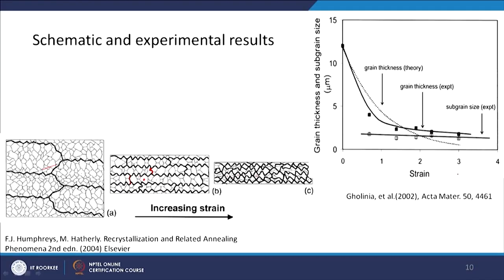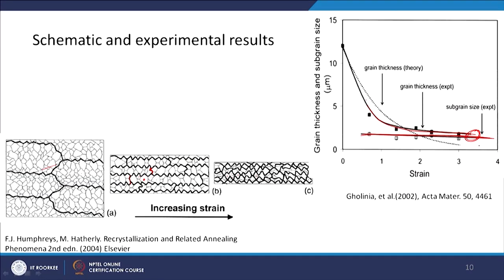On the curve showing grain thickness and sub-grain size as a function of strain: the sub-grain size remains almost constant — consistent with dynamic recovery — while the grain thickness continuously decreases. It is very thick initially and comes down, getting very close to the sub-grain size. This is the point where recrystallization starts happening and impingement or pinching off occurs, at a strain of almost 3 to 4 — again a very high strain. When the sub-grain size equals the spacing between high angle grain boundaries, the condition of pinching off is reached.